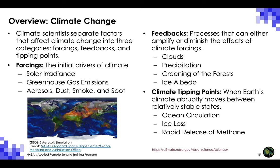Since the Industrial Revolution, concentrations of greenhouse gases such as carbon dioxide, methane, and nitrous oxide have risen in the atmosphere. Burning fossil fuels such as coal, oil, and gas has increased the concentration of atmospheric carbon dioxide from 280 parts per million in 1750 to 412.5 parts per million in 2020. These greenhouse gases absorb and then re-radiate heat in Earth's atmosphere, causing increased warming. The annual rate of increase in atmospheric CO2 over the past 60 years is about 100 times faster than previous natural increases.